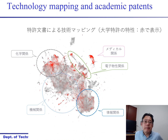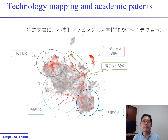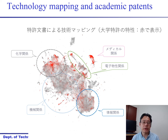Let me show you some of the research output we have. The first one is technology mapping and academic patents. Basically, using all the patent information content, we use text information to convert it to numeric vectors and map it into a two-dimensional space. Then we see how technological position in each patent is distributed.